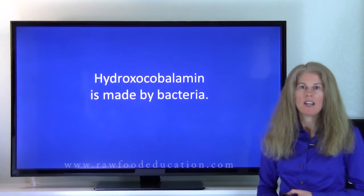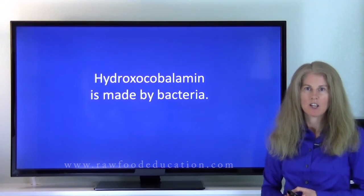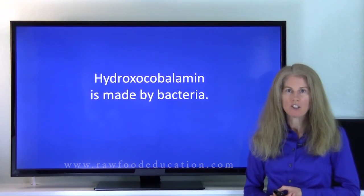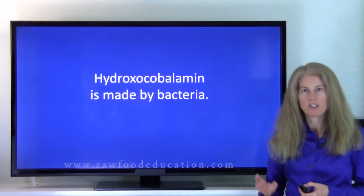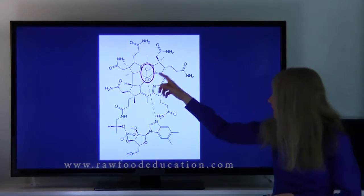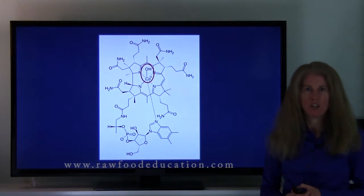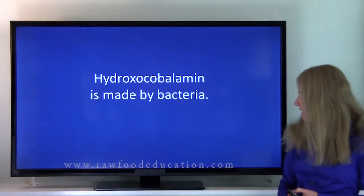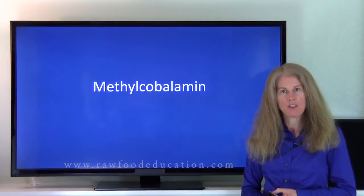Now, hydroxocobalamin is made by bacteria. It occurs in nature, but it's not a human bioactive form of vitamin B12. So what our body has to do to it is it has to take the hydroxyl group off of the cobalamin and replace it with, for example, a methyl group to make it human bioactive, which brings us to our next form of vitamin B12, methylcobalamin.